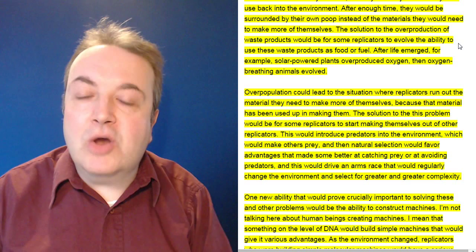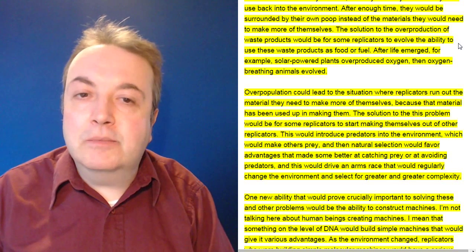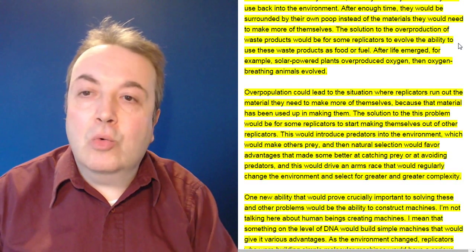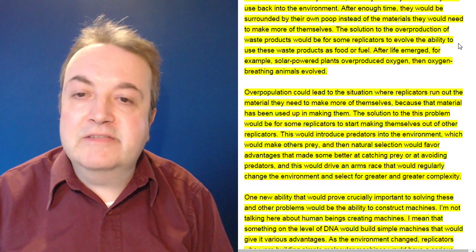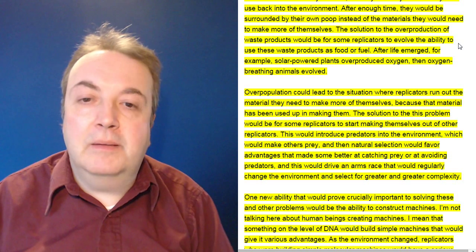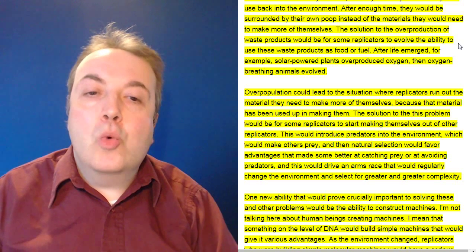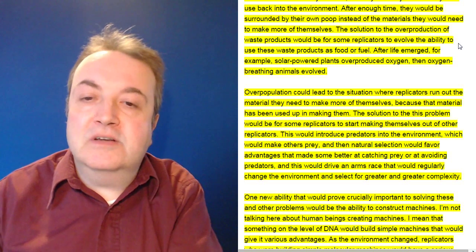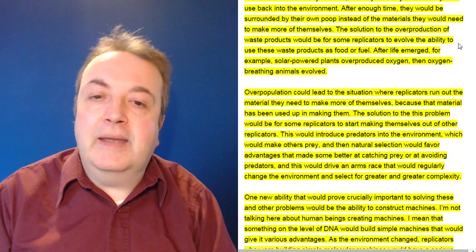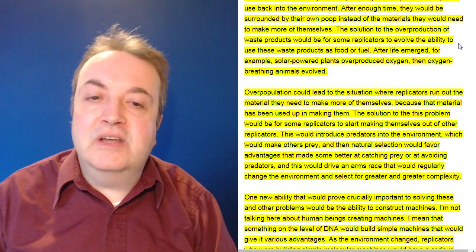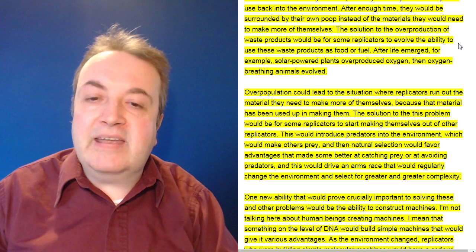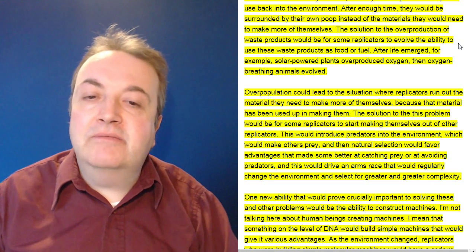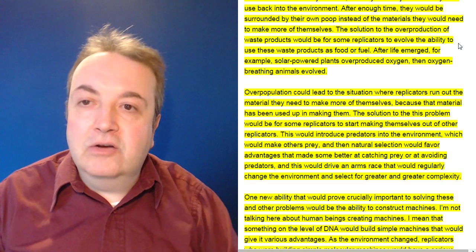After life emerged, for example, solar-powered plants overproduced oxygen, then oxygen-breathing animals evolved. Overpopulation could lead to the situation where replicators run out of the material they need to make more of themselves because that material has been used up in making them. The solution to this problem would be for some replicators to start making themselves out of other replicators. This would introduce predators into the environment which would make others prey. And then natural selection would favor advantages that made some better at catching prey or at avoiding predators. And this would drive an arms race that would regularly change the environment and select for greater and greater complexity.